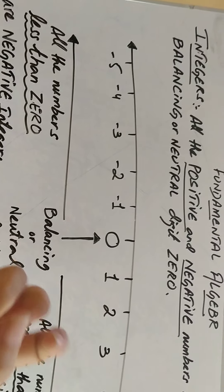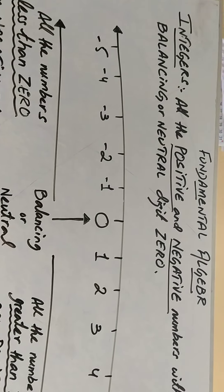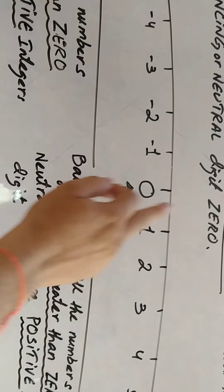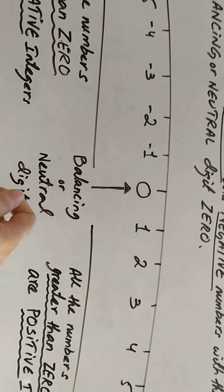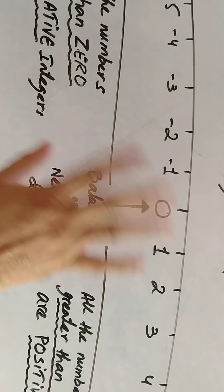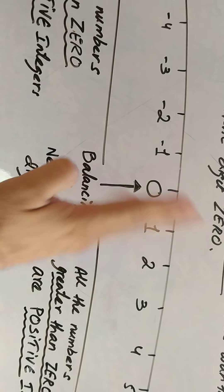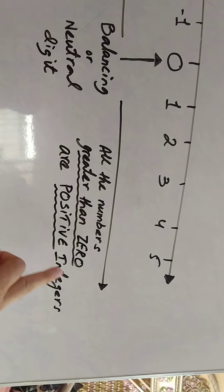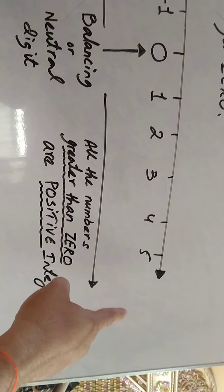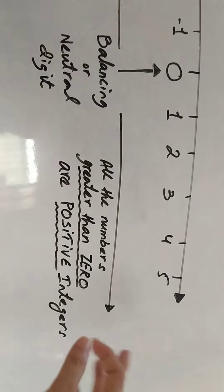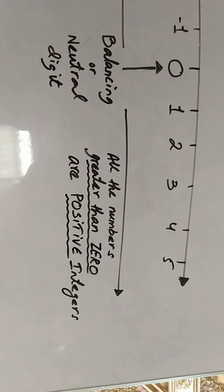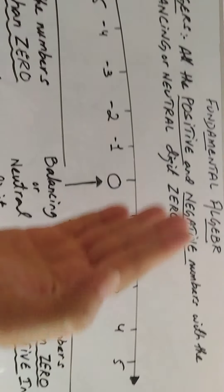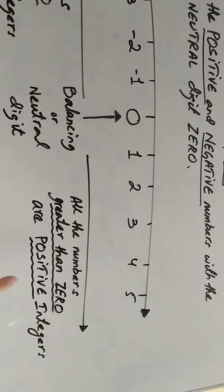This is a short and complete definition of integers. If anyone asks you what are integers, you can answer: all the positive and negative numbers along with the balancing digit 0. We call 0 a balancing digit because it is the only digit that does not have any sign before it — no positive, no negative. It is called a neutral or balancing digit. All the numbers greater than 0 are called positive integers, and all the numbers less than 0, smaller than 0, towards the left of 0, are negative integers — they have a minus sign before them.